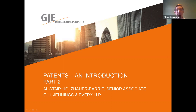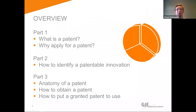We have split the patents part into three sections, of which this is the second. If you missed the first part, you can find this on our website. Part two will go through how to identify a patentable innovation. Part one covered what a patent is and why you may wish to apply for a patent. And part three will cover what goes into a patent, the process a patent application goes through to get granted, and how a patent can be used once it's granted.